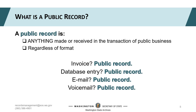The Revised Code of Washington, or RCW, is the legal framework that governs the work we do as employees of state and local government agencies. Chapter 40.14 of the RCW tells you how to manage, destroy, or transfer public records. It also provides a straightforward definition: public records are anything made or received in the transaction of public business.